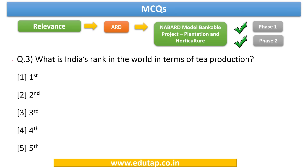Question number three: What is India's rank in the world in terms of tea production? The answer is second — India ranks second in the world in terms of tea production. Which country ranks first in the world in terms of tea production? You now have two questions to answer in the comments: which country stands first in horticultural crops and vegetables, and which country stands first in tea production?